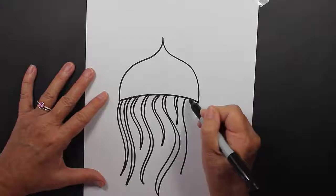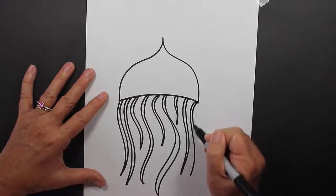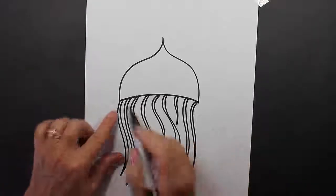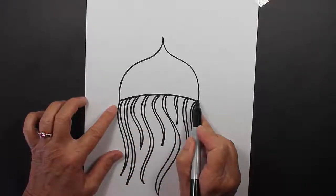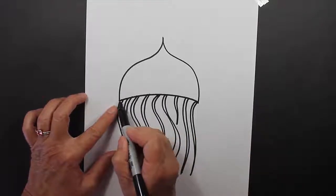There we go, almost finished. We went all the way across our curved line with our tentacles that come down. You can have as many or as few as you'd like.